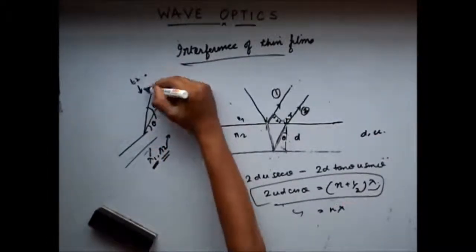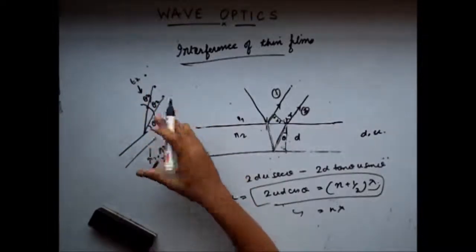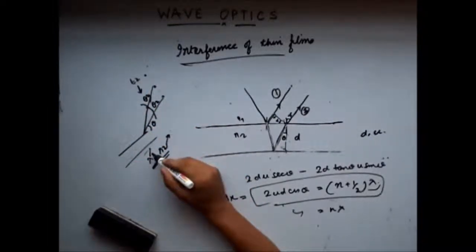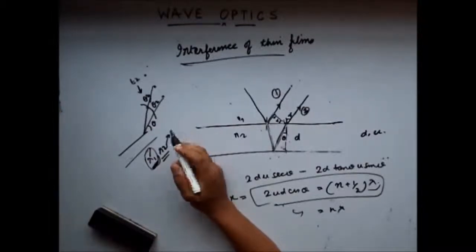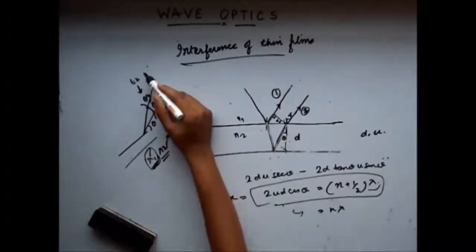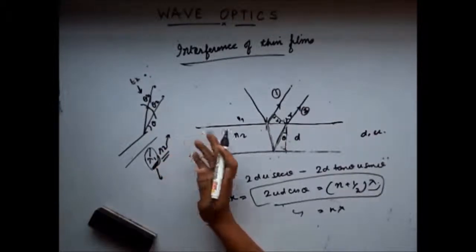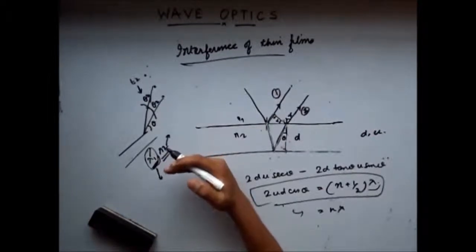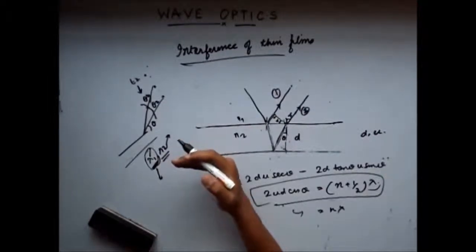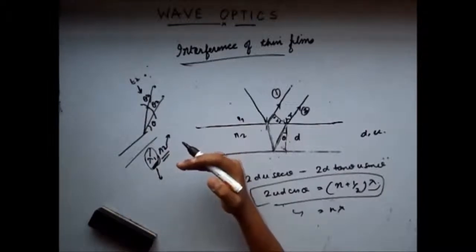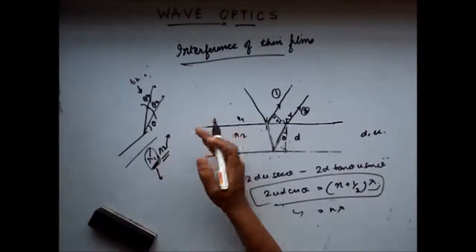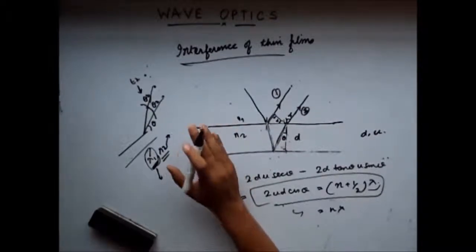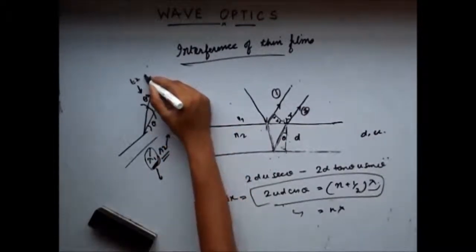If I change my viewing angle to theta 3, what happens is the path difference for λ1 comes out equal to a multiple of (n + ½)λ, giving constructive interference again. So we will get colours corresponding to λ1 and not λ2. As I keep varying the viewing angle, different wavelengths fulfill the condition for constructive interference, and only those wavelengths can be seen at each particular angle.